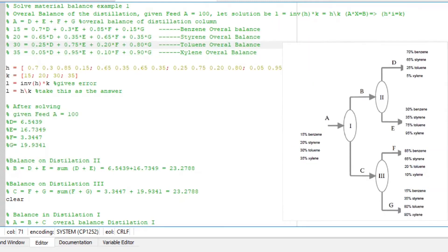So basically what we don't know are the overall flow rates for B, D, E, F, C, G, and the compositions of B and C.